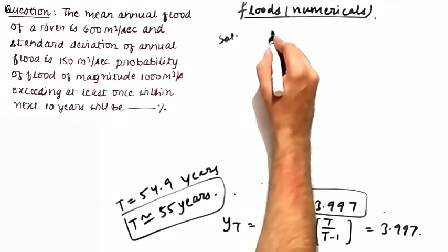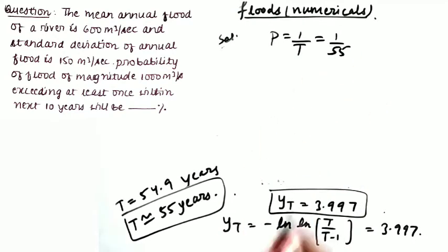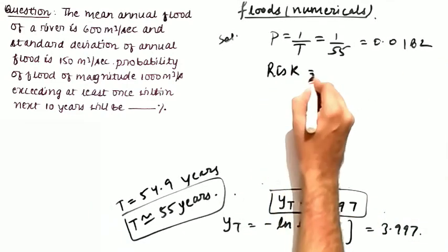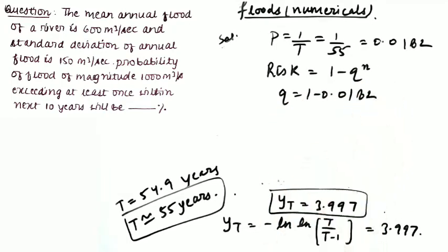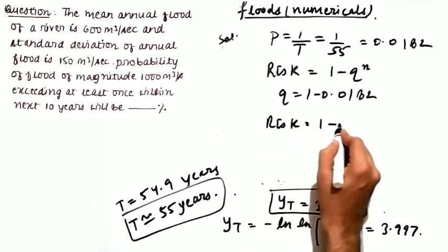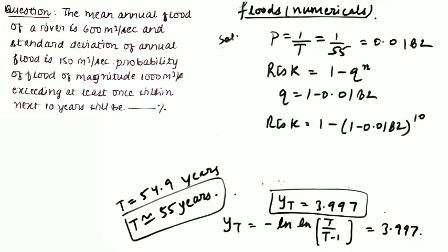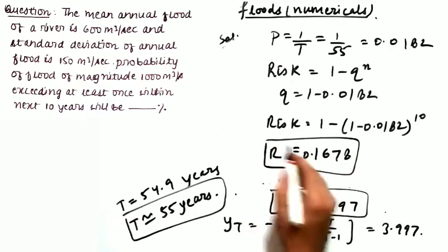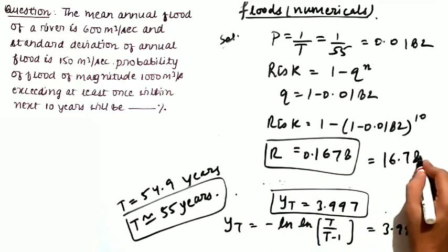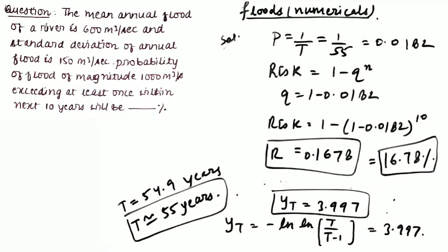The probability p = 1/T = 1/55 = 0.0182. Risk = 1 - (1-p)^n = 1 - (1 - 0.0182)^10 = 0.1678, or 16.78%. This is the risk involved with this particular structure.